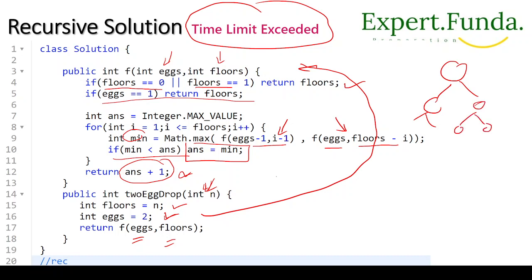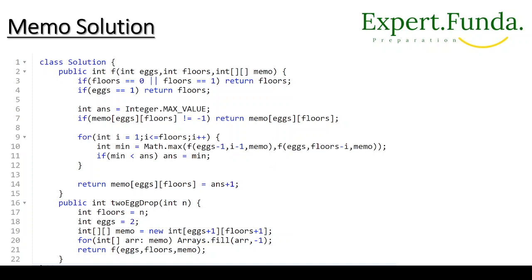For the memoization approach: create a memo array of size (egg+1) by (floor+1) filled with -1, then call the recursive function. Inside, if memo is not -1, we have already calculated this and return it directly. Otherwise, loop i from 1 to floor, compute Math.max of recursive calls for (egg-1, i-1) and (egg, floor-i), passing memo to update it. Update answer if smaller, then store answer plus 1 in memo and return it.